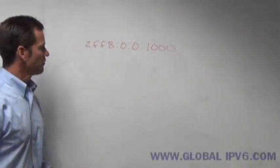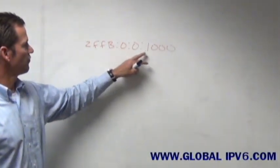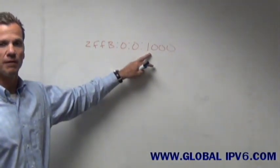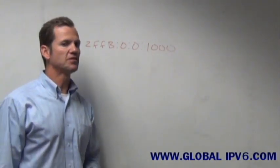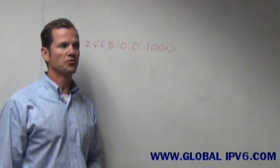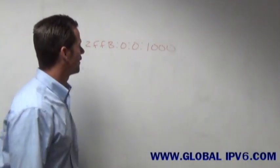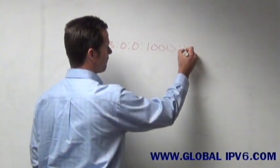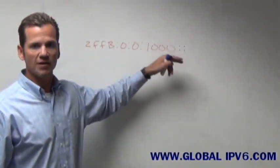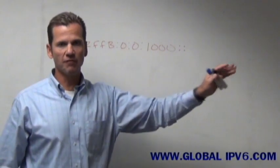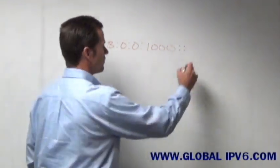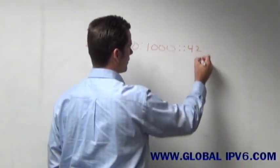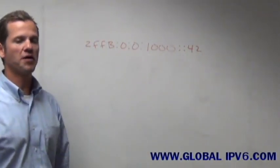So for example here, let's say we had an address 2FFB:0:0:1000. There's a couple options I have here to assign the host portion. Number one, what I could do is I could simply put all zeros on the end by putting double colons. So by putting double colons, that means I'm filling the rest of it in with zeros except the last byte and I could put a number 42 there.